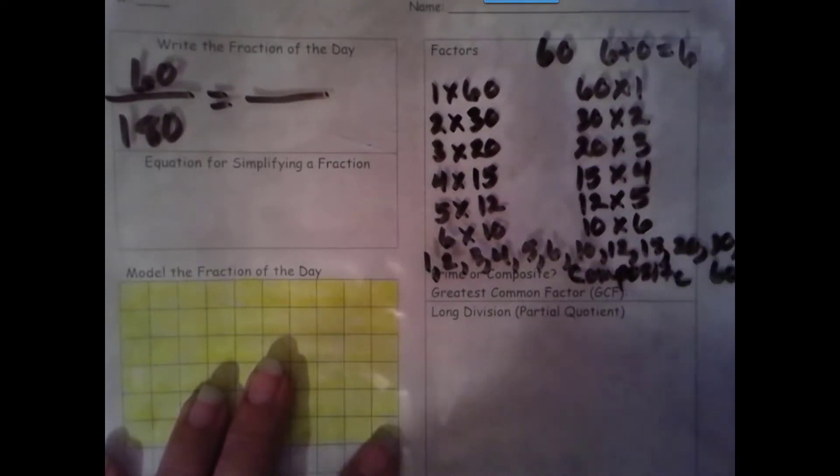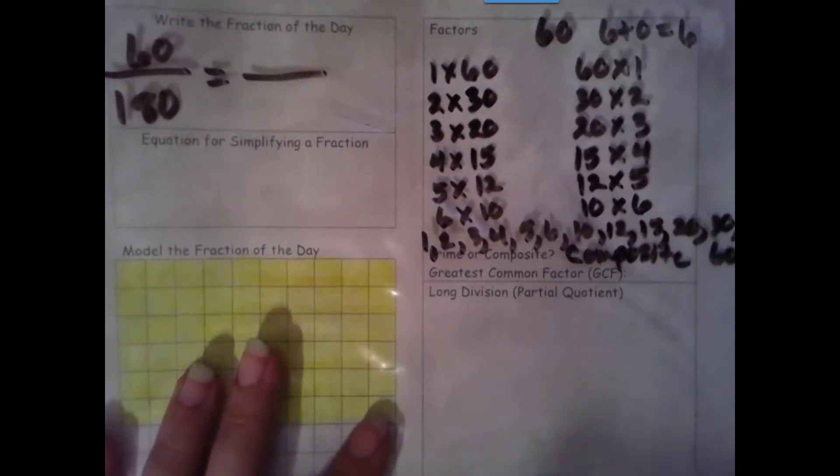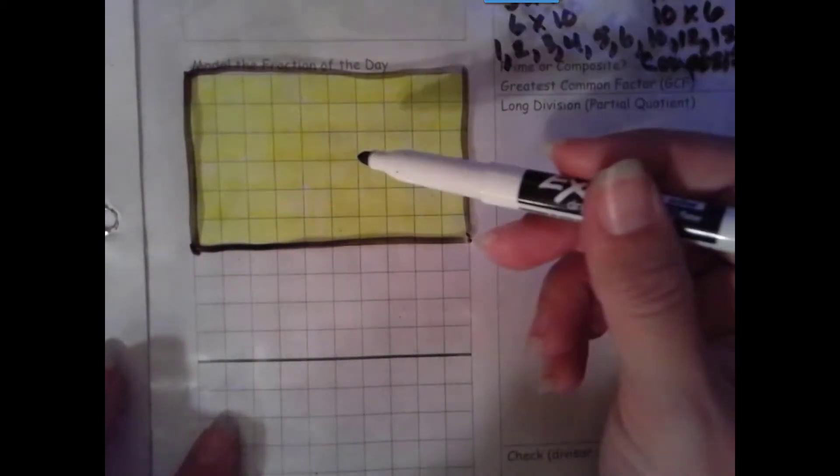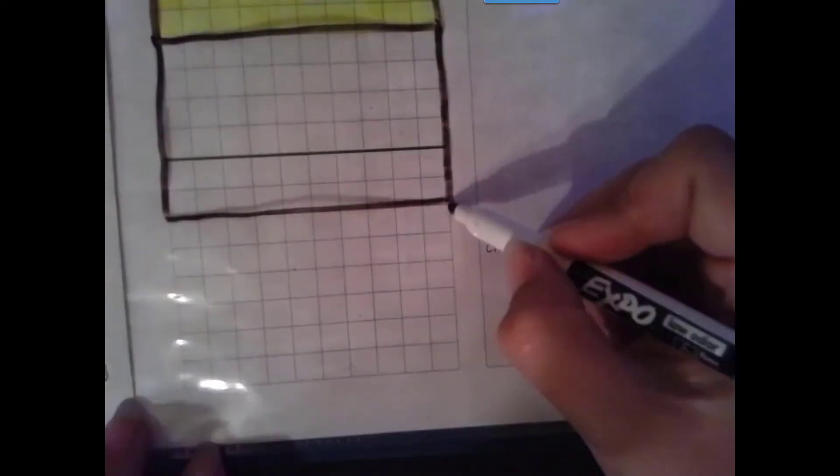Now we need to find our greatest common factor. So let's start with our greatest factor of 60. If that doesn't work, we'll go down until we find one that does. But we always start with our greatest one. So finish that row. We have 6 tenths. Make sure you keep your shaded separated from your unshaded. 10, 20, 30, 40, 50, 60. And yes, 60 worked. Yay! So 60 is our greatest common factor.